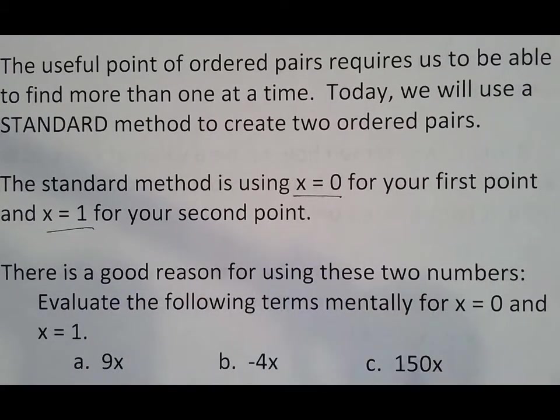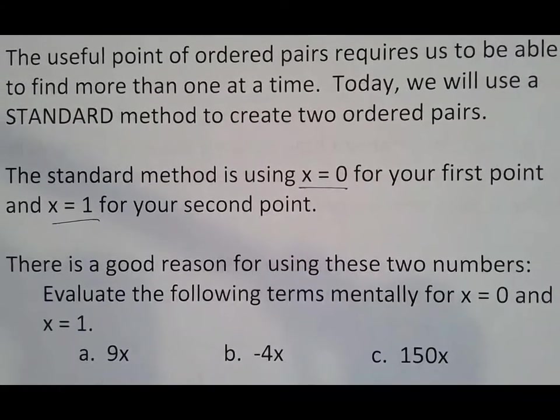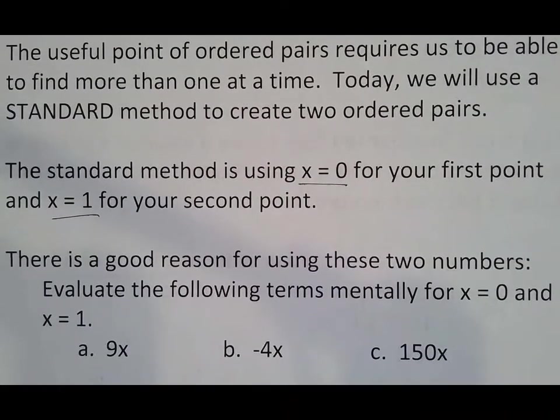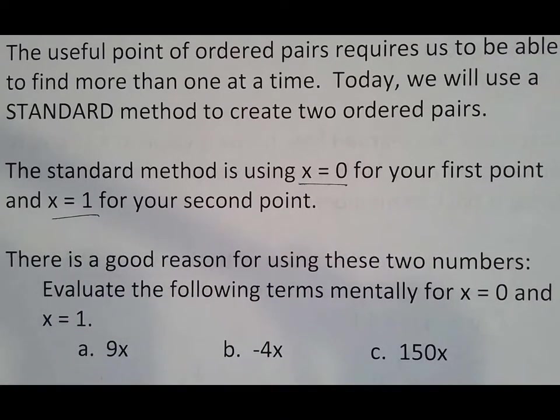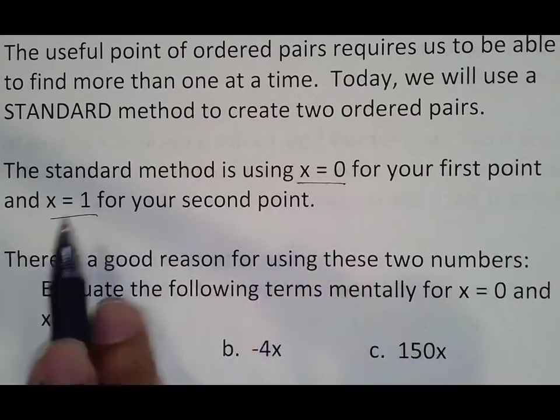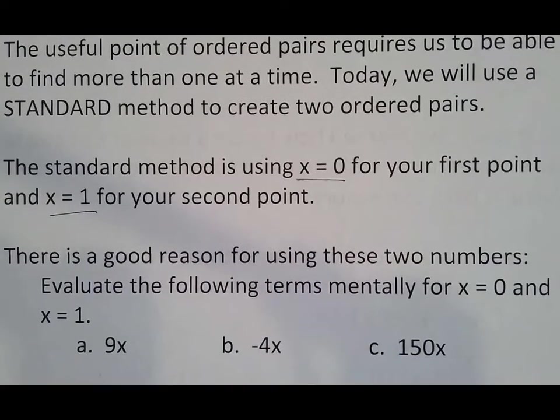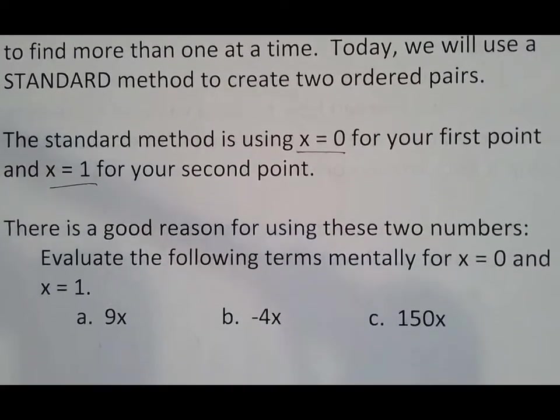You might want to write that down, because what you're going to do is you're going to miss a bunch, you're going to get frustrated, you're going to tell me you don't get it, and it's because you're not using x equals 0 first, and x equals 1 second, and that's going to be on you, because I'm telling you to make sure you write that down. You have to do it that way. There is a good reason, though, for using those two numbers.